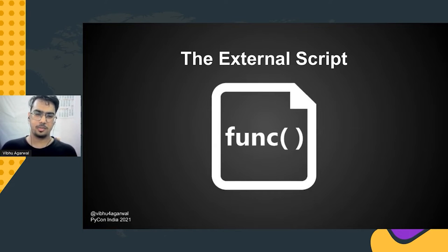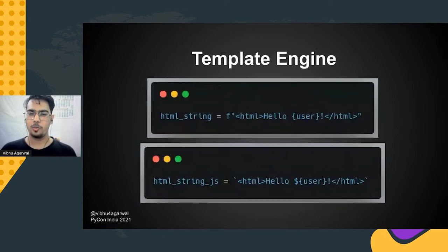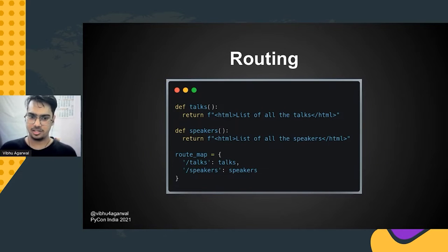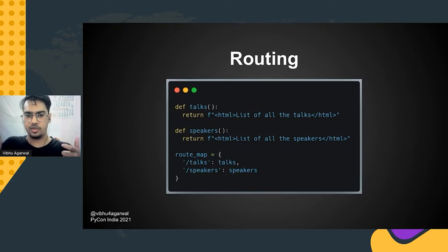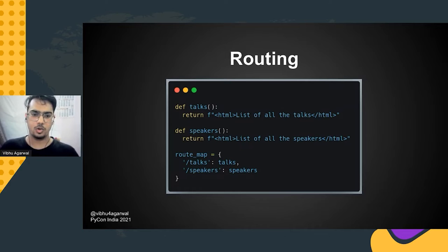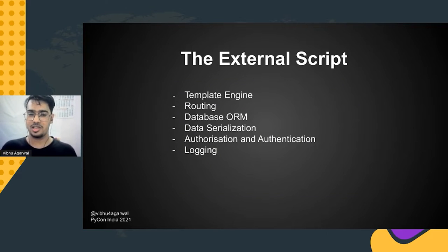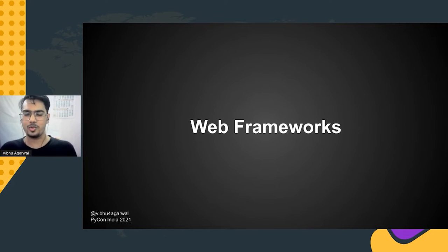What are the common tasks of this external script? One common task is generating dynamic content, which you can do by embedding dynamic content into HTML using string formatting or templates. Another common task is routing — there can be multiple HTTP paths, and you want to map a particular path to a particular function, also known as URL dispatchers. This whole mapping of a path to a URL dispatcher function is known as routing. There are many other common tasks needed in backend servers, all of which are separated out into a separate tool — what we know as web frameworks.